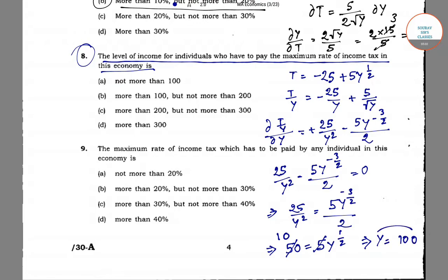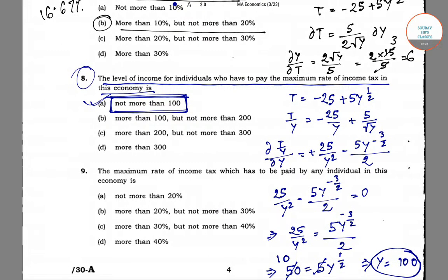The maximum level of income for individuals paying the maximum taxes is 100. So option A is correct: not more than 100. The answer 100 is included in option A — anything from 0 to 100 is included. So our answer is option A for question number 8.